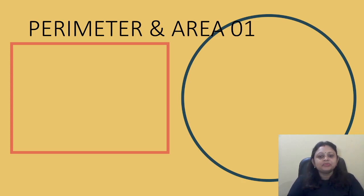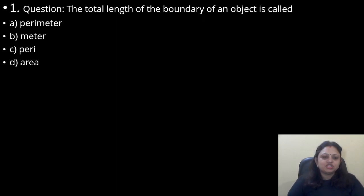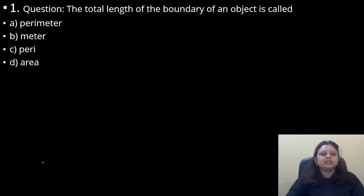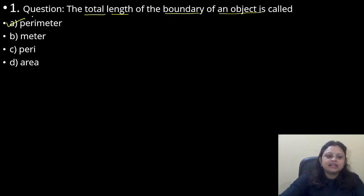Let's get started. Our first question: the total length of the boundary of an object is called — option A, perimeter; B, meter; C, peri; D, area. So in the question it is given the total length of the boundary of an object. It is known as perimeter. So here the correct answer is option A, perimeter.